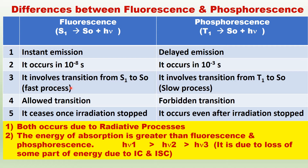Why is fluorescence a fast process? Why is it instant emission? Because the transition S1 to S0 is allowed — this transition is allowed. Whereas the transition from T1 to S0 is not allowed, because this is a triplet state to singlet state transition. In fluorescence, there is no change in spin multiplicity. In phosphorescence, there is a change in spin multiplicity — this is a forbidden transition, and therefore it is a slow process.